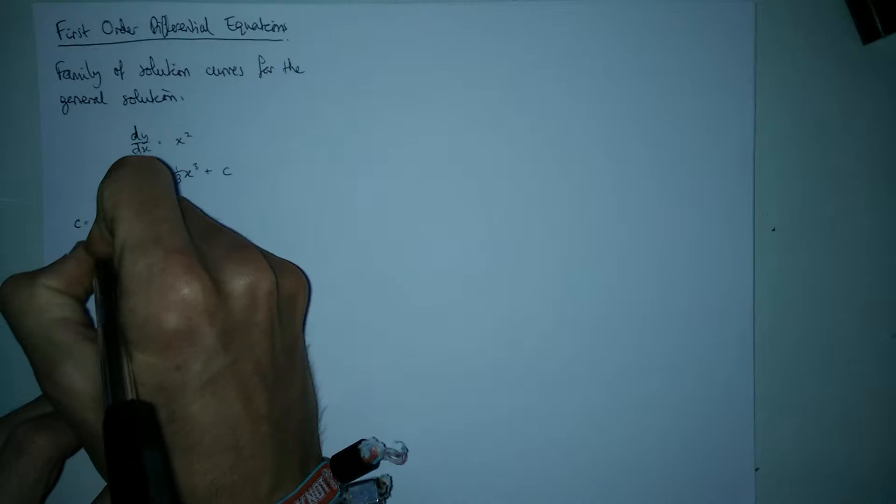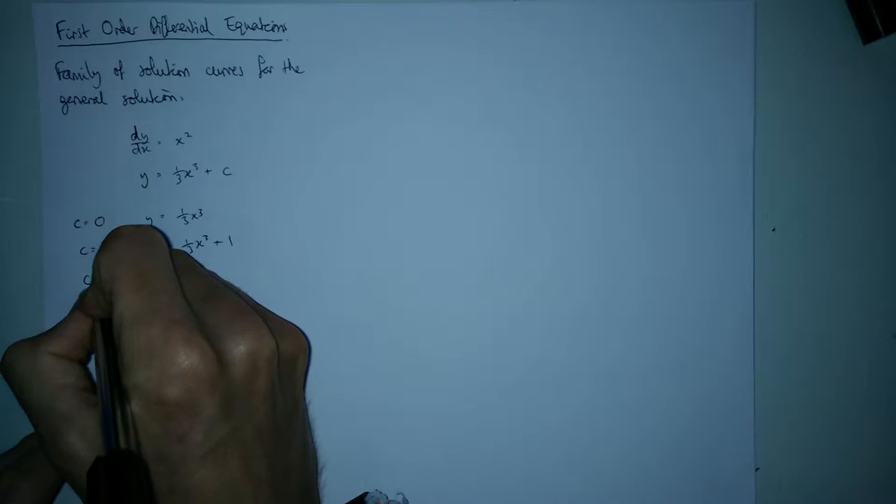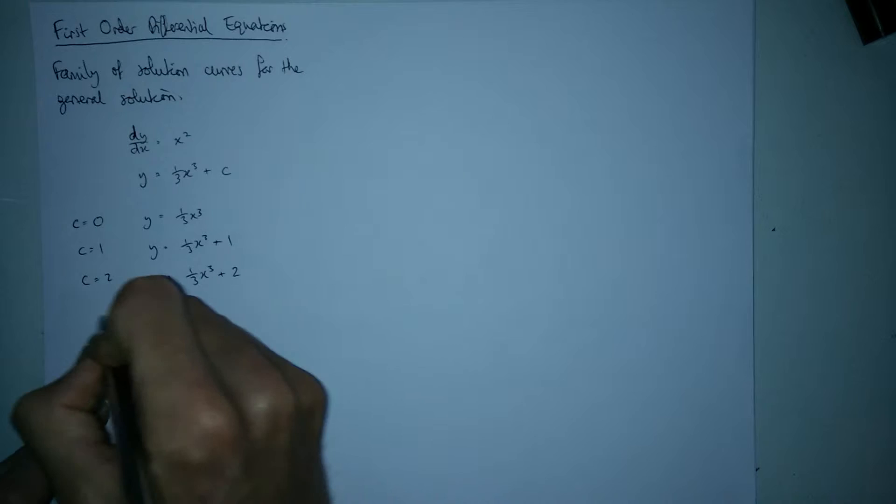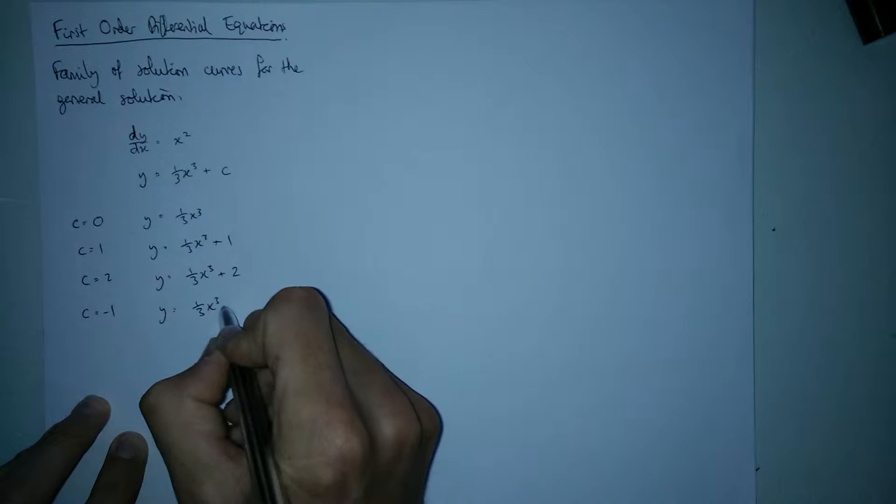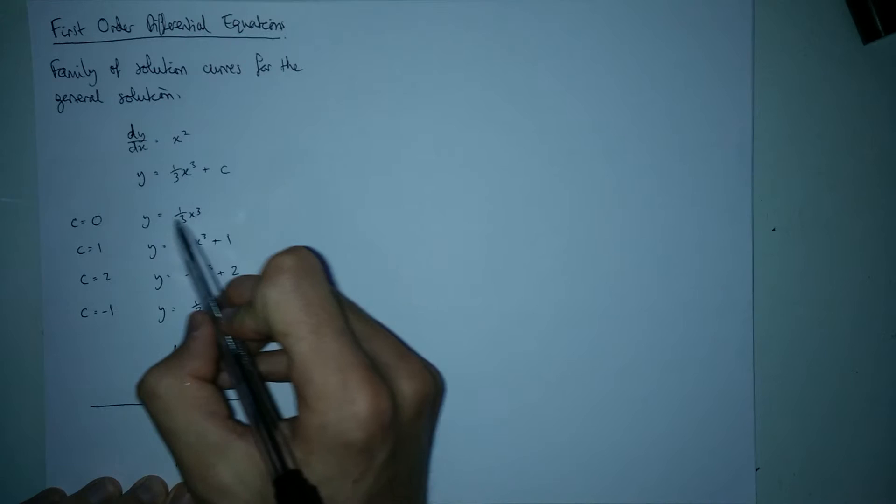Imagine if c was 0, then one of the solutions we'd have would be this. If c was 1, we'd have this. If c was 2, we'd have this, and so on. And each of these is a curve. In fact, when you put them all together, you've got a family of curves, and these curves are solutions, so what we've got is a family of solution curves. And we can sketch these in a graph and you can sort of see a pattern that emerges from them.